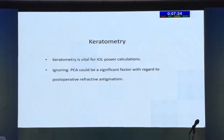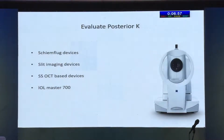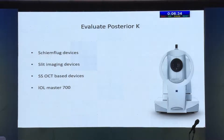Small errors in keratometry reading can give you large errors in your calculation of IOL power, so keratometry should be very accurately calculated. Ignoring posterior corneal curvature is another source of wrong values. K values can be determined by keratometer, topographer, or tomographer. We need tomographers that give you both anterior and posterior corneal curvature. The newer swept source optical biometers give you posterior curvature, anterior curvature, axial length, anterior chamber depth, lens thickness, and white-to-white — all from slit imaging or SSOCT devices.